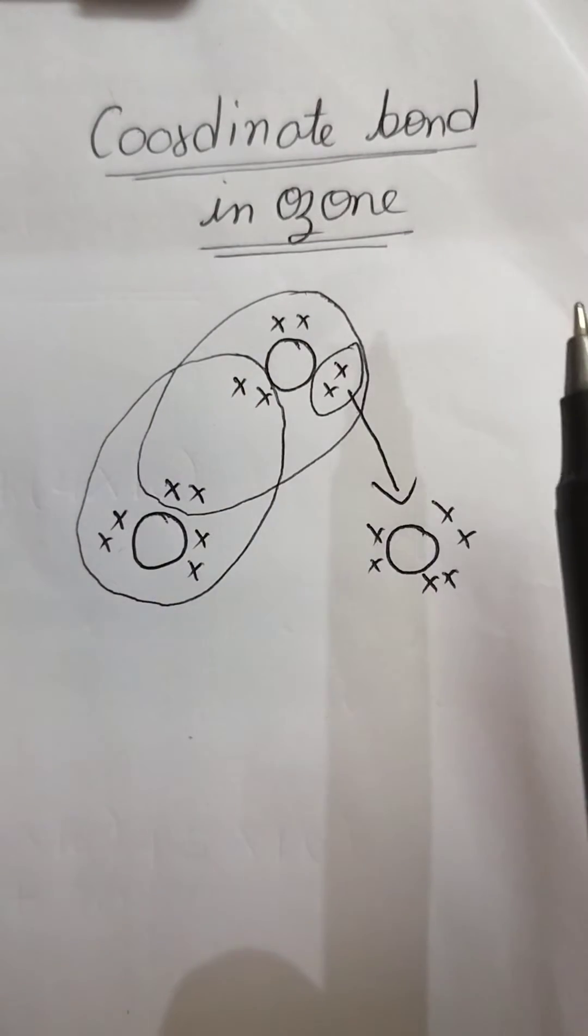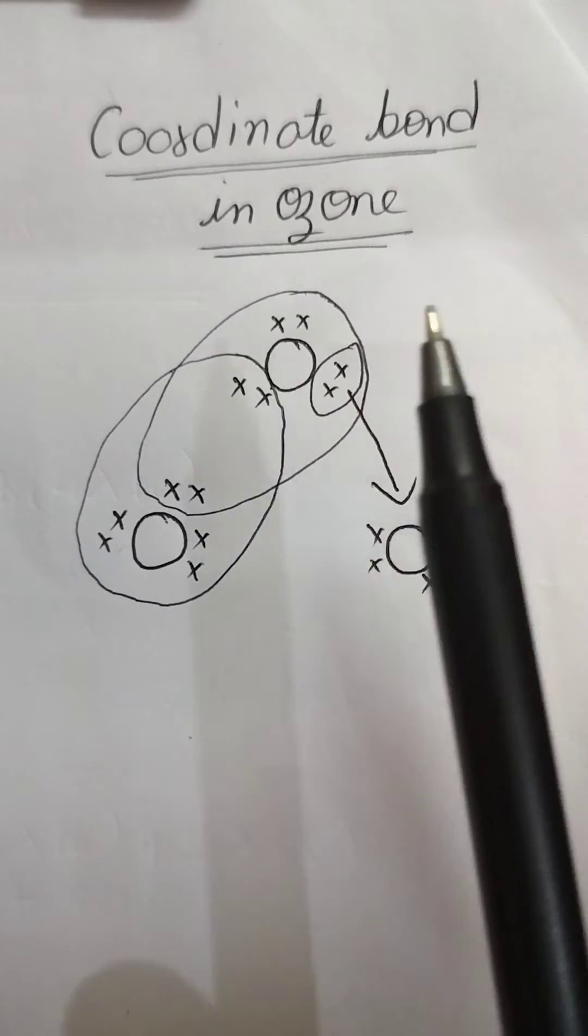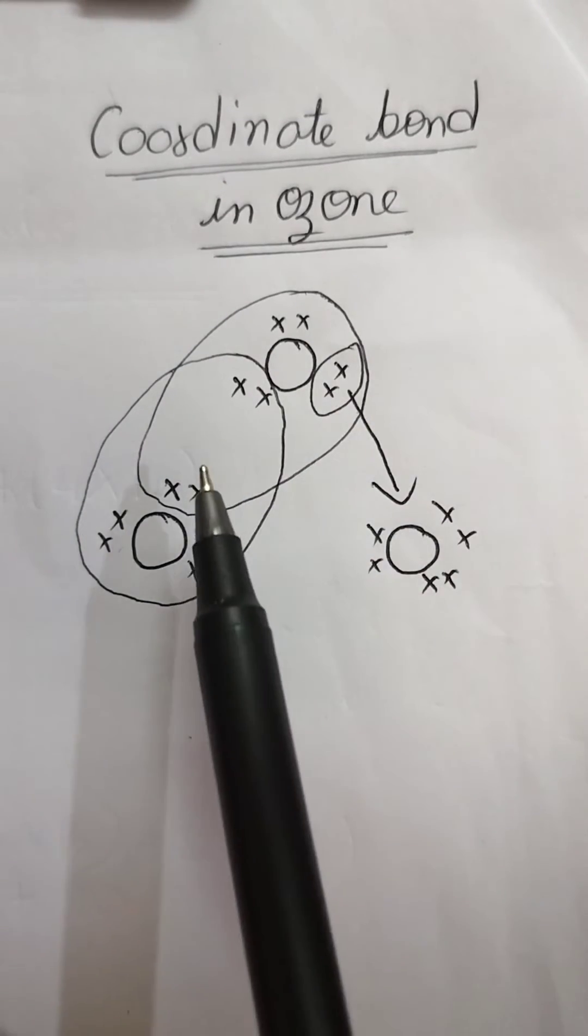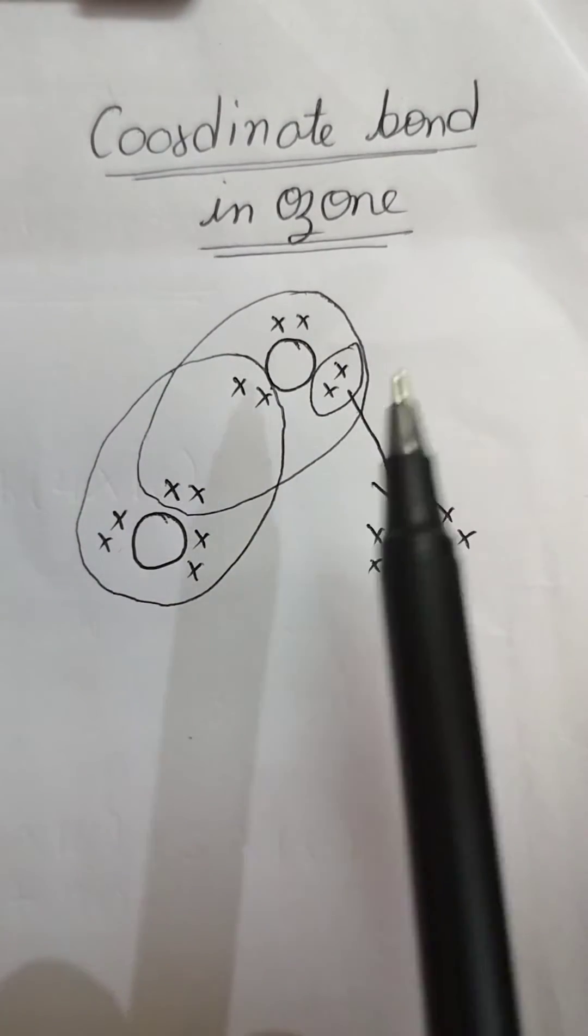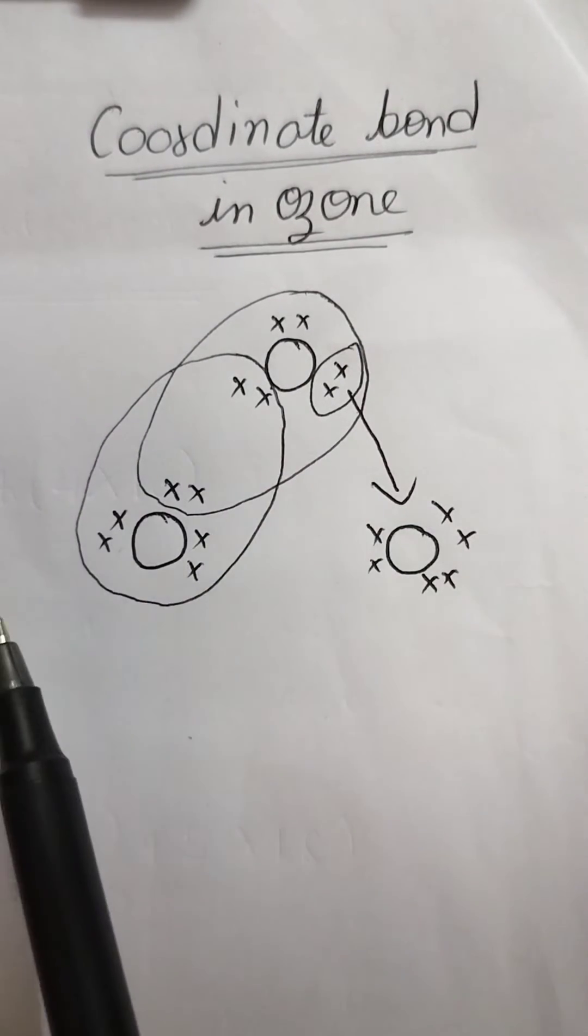There are a number of molecules where coordinate bond exists. So the easiest example or you can say one of the examples is ozone. Ozone is O3. This is the layer which protects you from the harmful UV radiations. Now there are three oxygen atoms in ozone.